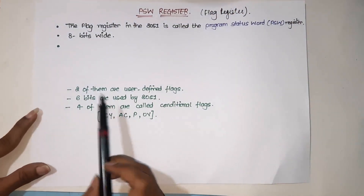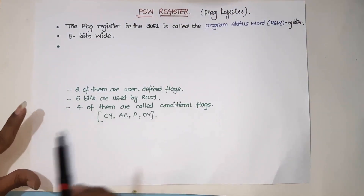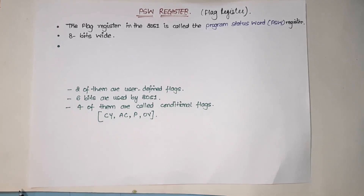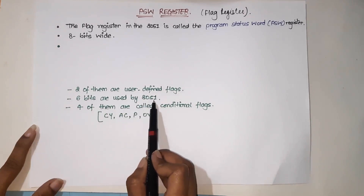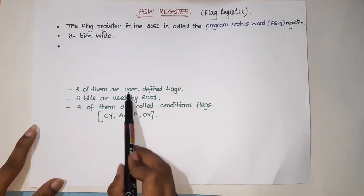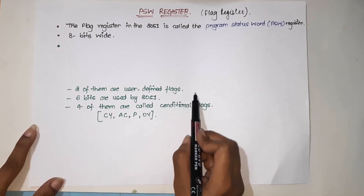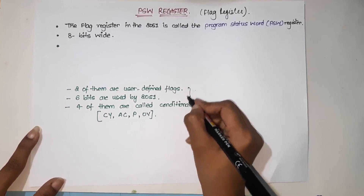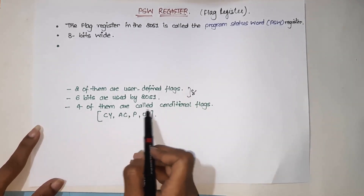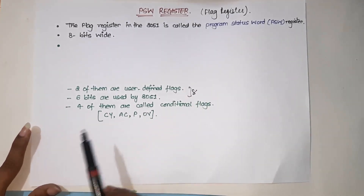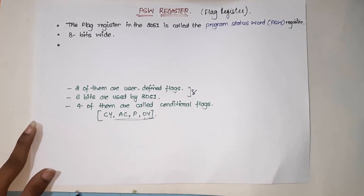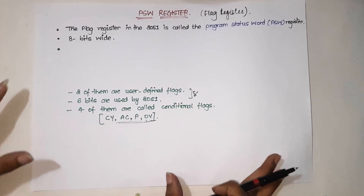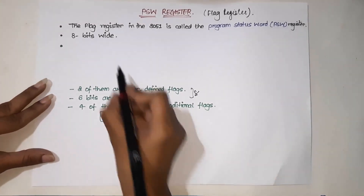Even though this is an 8-bit register, two of them are user-defined flags, meaning six are used by the 8051 and two are user-defined — making a total count of eight. Four of them are called conditional flags. Now what are these conditional flags? We'll look into detail. Let us first draw a diagram.